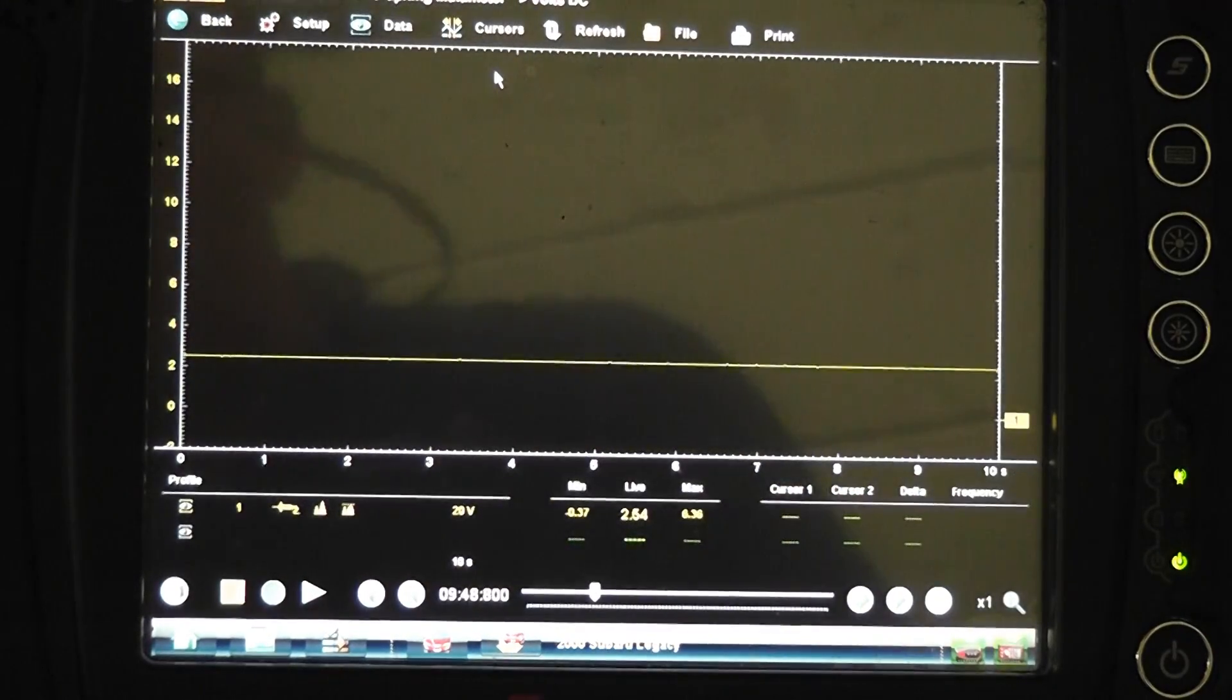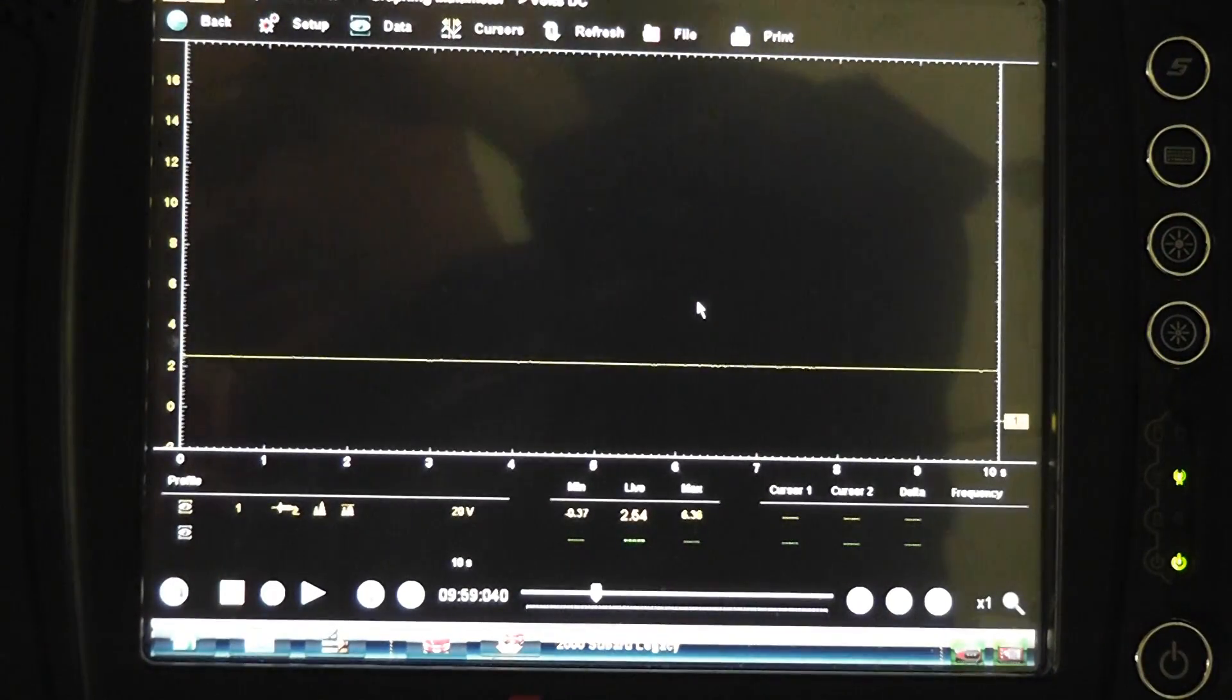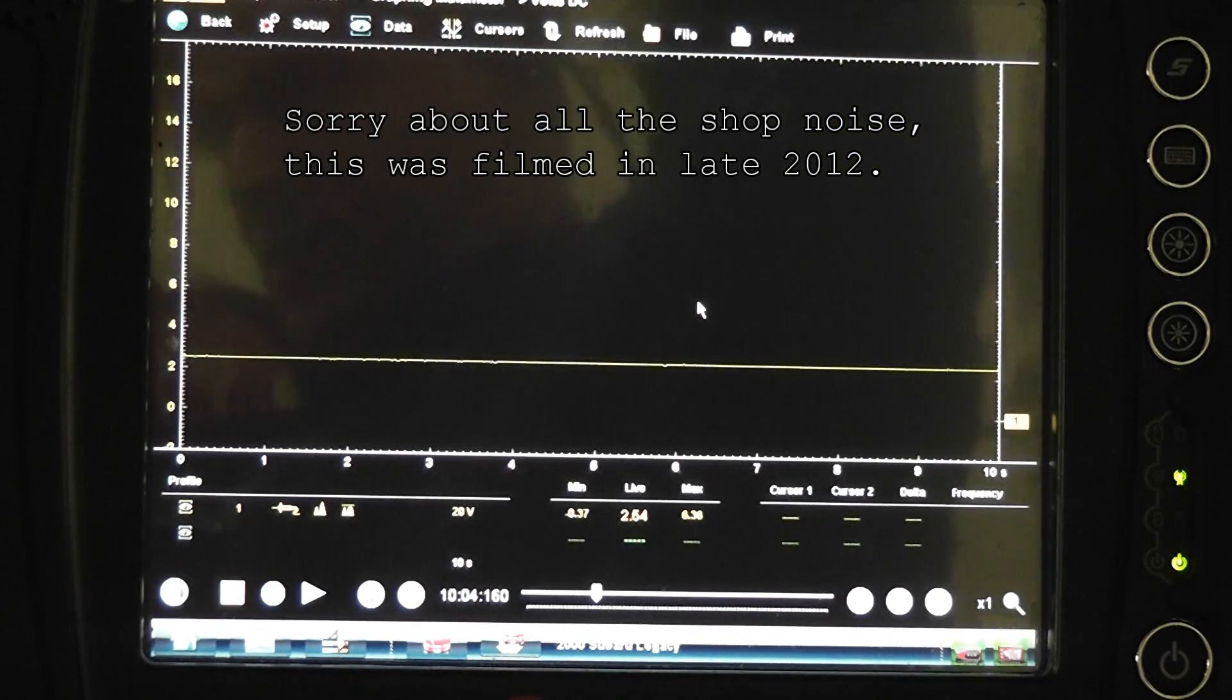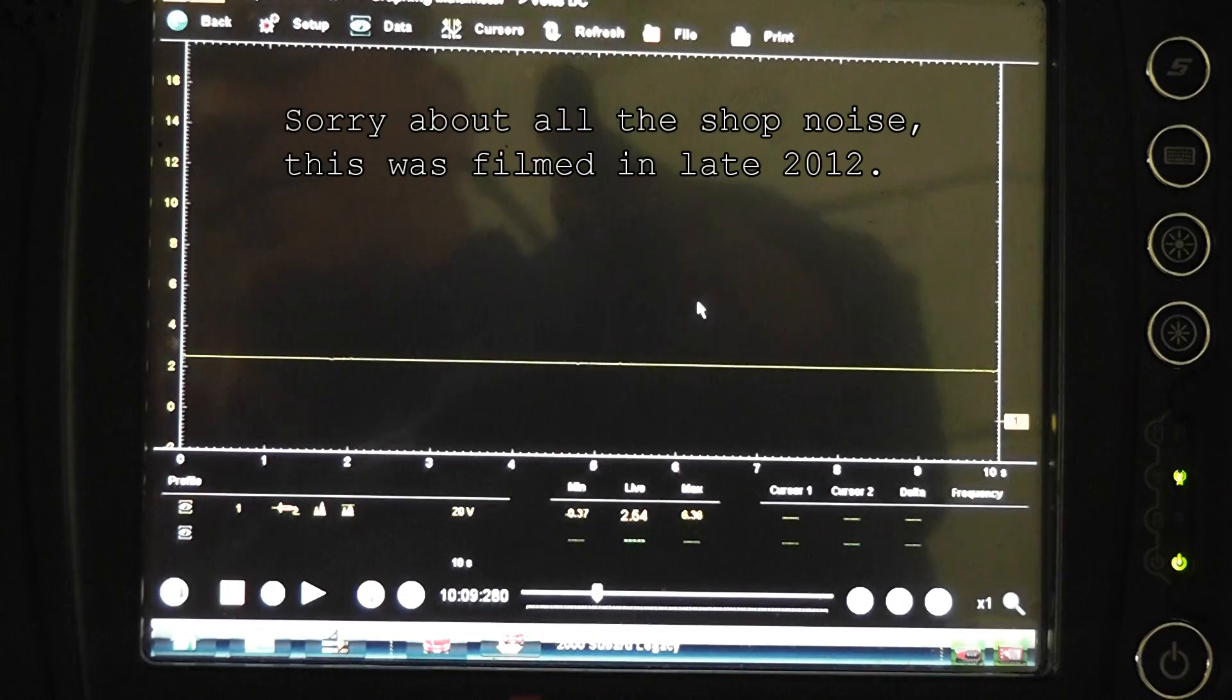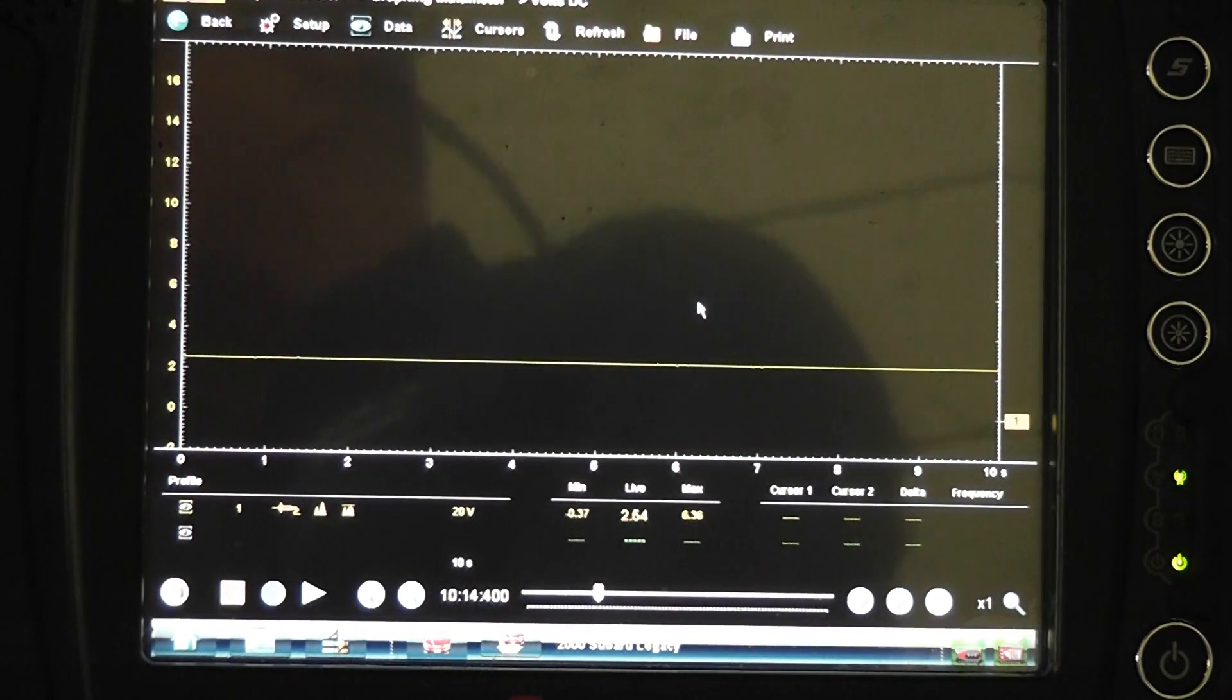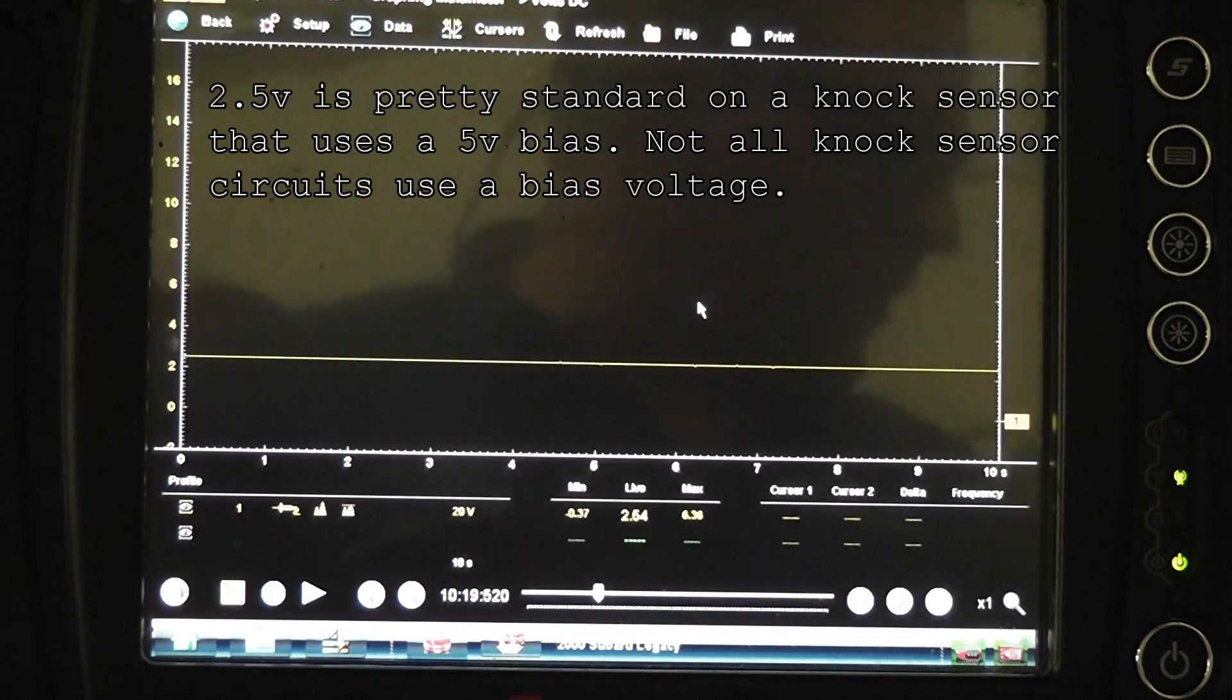We're on a graphing multimeter right now, and we're reading about 2.5 volts on this knock sensor and what that line is. It is a bias line that this sensor uses, and I misspoke in the last segment, it's actually a 5-volt bias on this, not a 7. So the computer sends 5 volts to the sensor. The resistance of the sensor actually pulls it to ground a certain amount. 2.5 volts is pretty good, that's what we want to see.